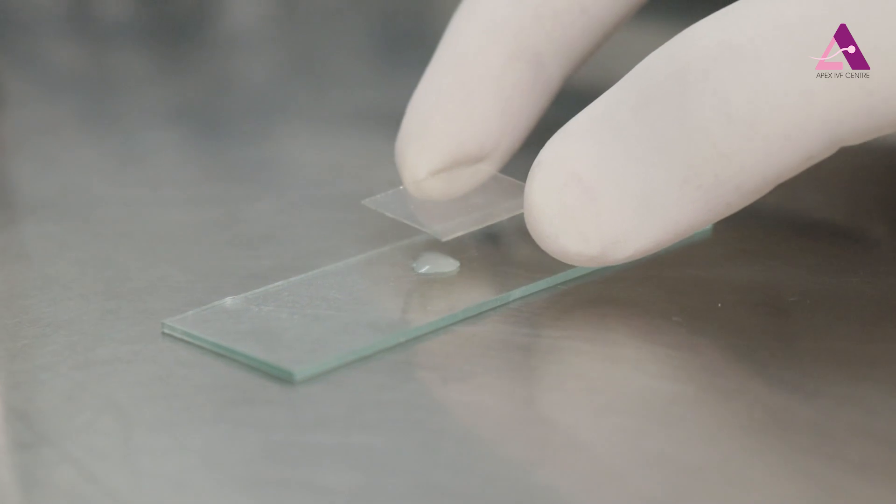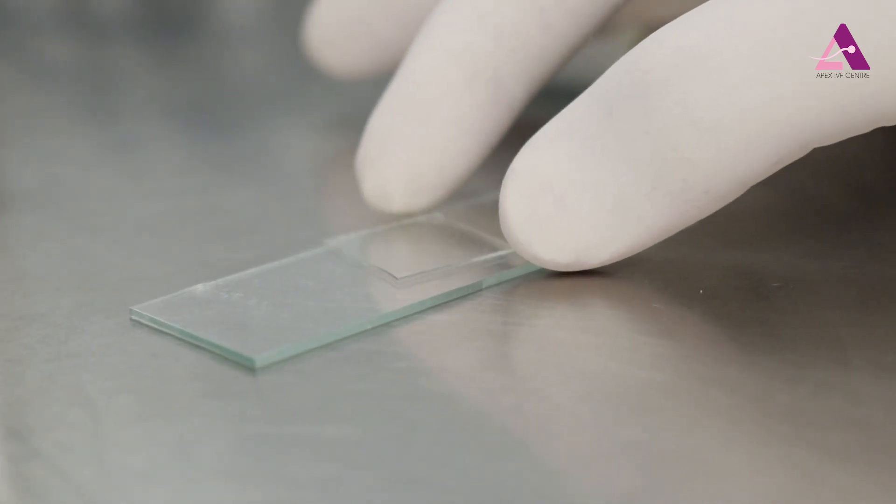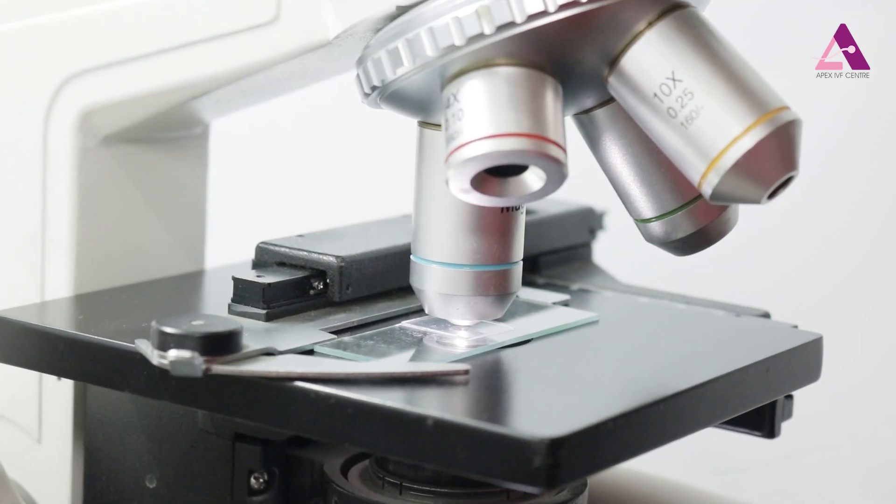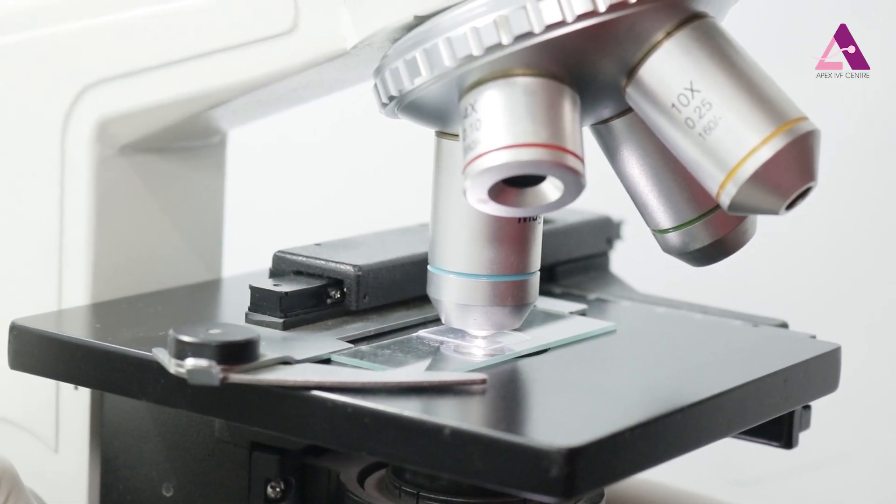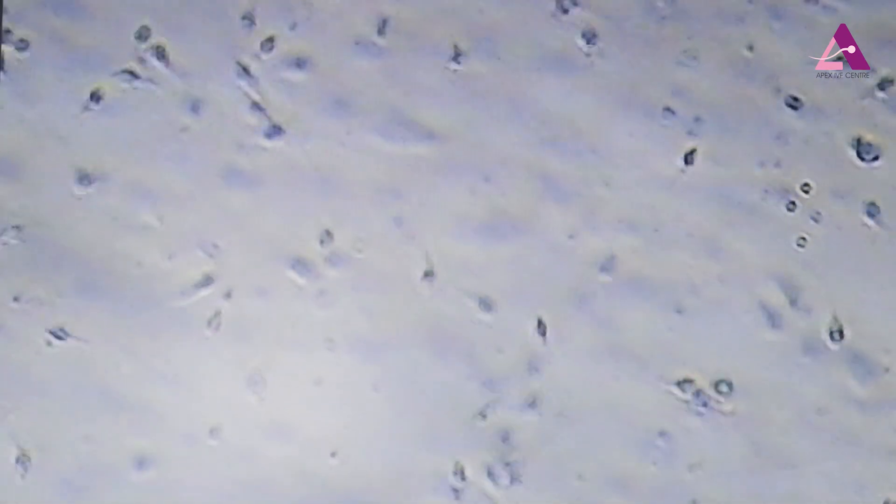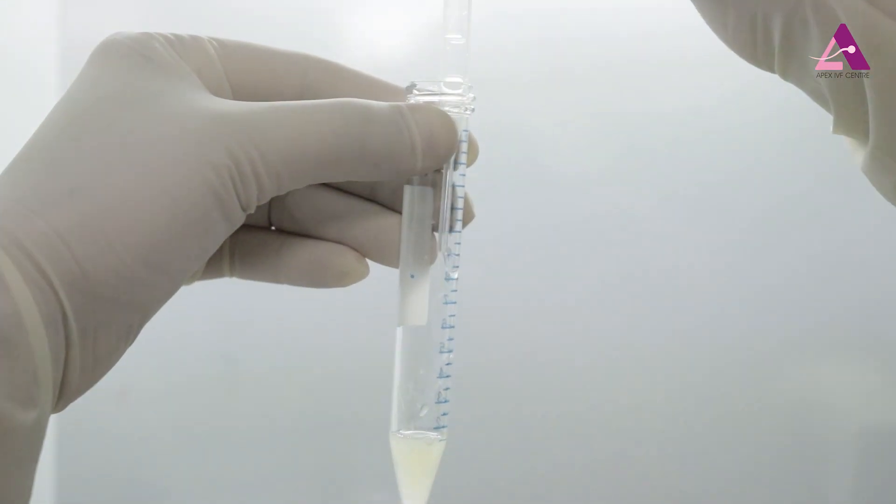A raw sample usually has immotile sperms along with good sperms and some impurities. The very purpose of preparing the sample for either IVF or IUI is to take out the impurities. We take the sample in a conical test tube